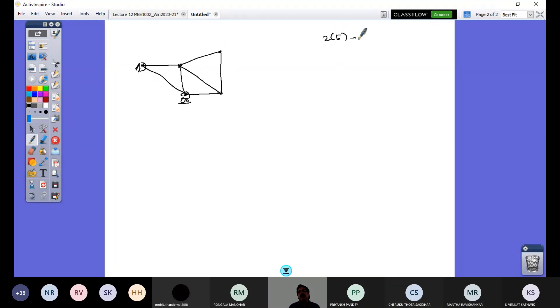So 2 into 5 minus 3, that's equal to 10 minus 3, 7 members. Look at 1, 2, 3, 4, 5, 6, 7 members. So it is a perfect, statically determined truss.